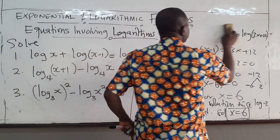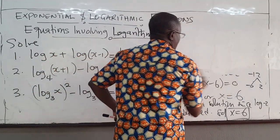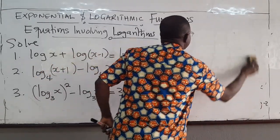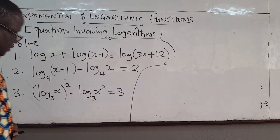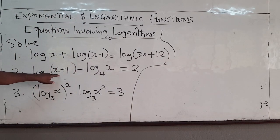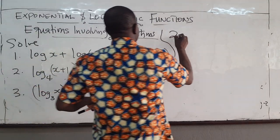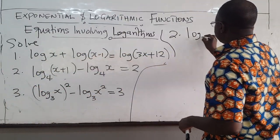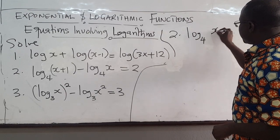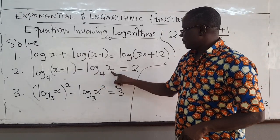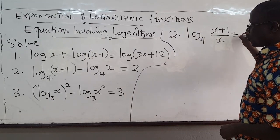Let's do number 2. We have log base 4 of x plus 1 minus log base 4 of x. We can group these guys. So we can write this as log base 4 of x plus 1 all over x, and that is equal to 2.